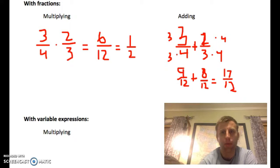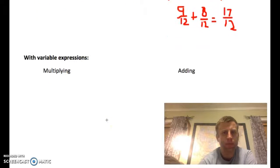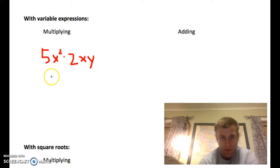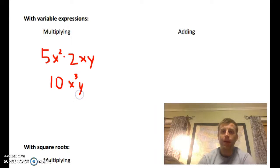Remember, with variable expressions, multiplying, they don't need to be alike. In other words, five-x squared times two-x-y. They're not really like. They have different variables. But you can still multiply them. So, ten x to the third y.